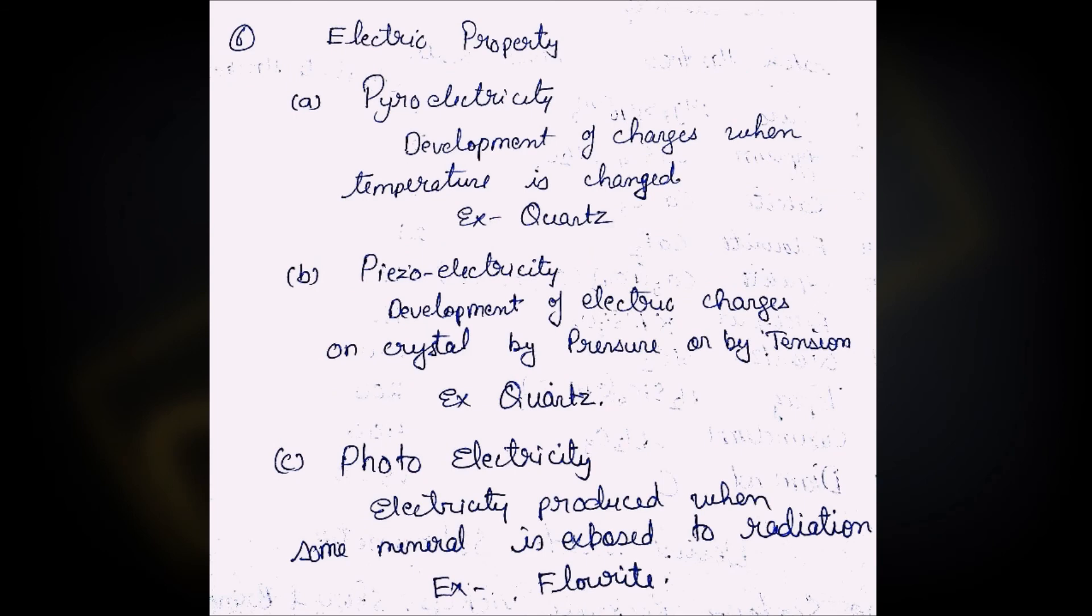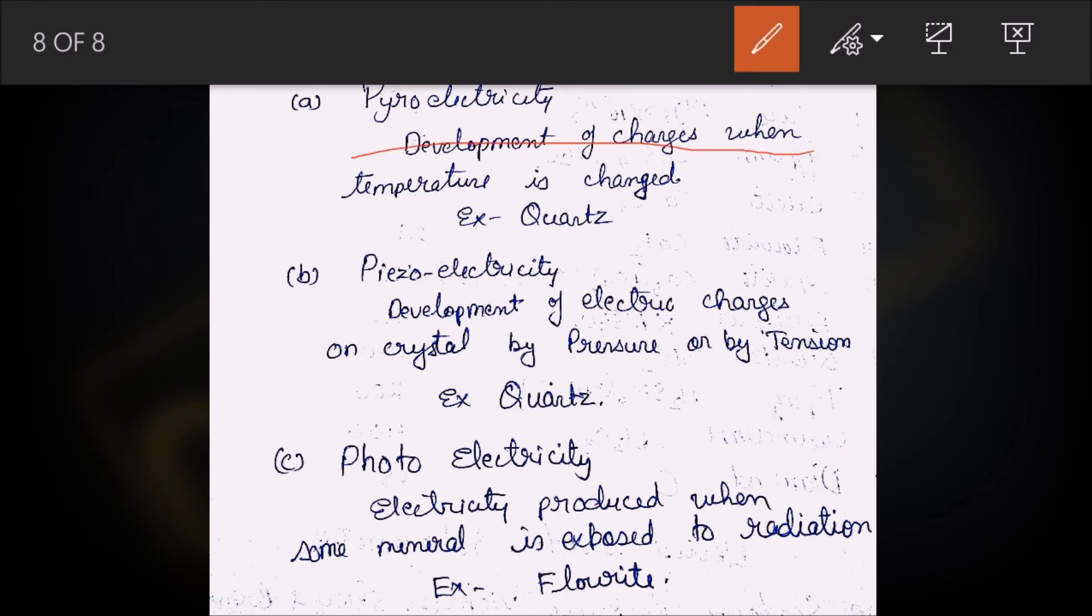The last property is electric property. Some elements produce electricity on giving different physical conditions. First is pyroelectricity - development of charges when temperature is changed, generally when temperature increases. Quartz is an example. Piezoelectricity is the development of electric charges when there is pressure or tension. Again, quartz is the example. Then there is photoelectricity, a very rare type in which electricity is produced when some mineral is exposed to radiation. Fluorite is an example of this.